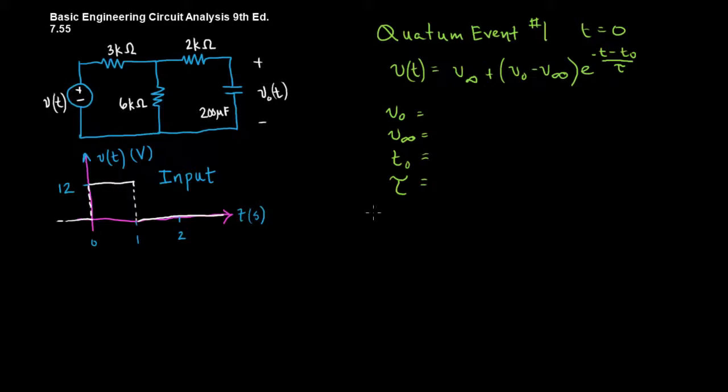We'll start with tau. To do tau, remember we look for our thevenin. Our thevenin in this case will treat the voltage source like a short. The 3k and the 6k are in parallel and they get combined into a 2k resistor. 2k plus 2k is 4k. And 4k times 200 microfarads will give you a time constant of 0.8 seconds.